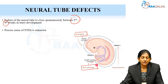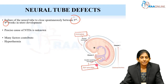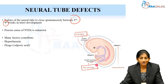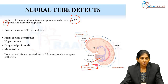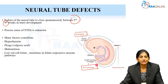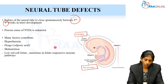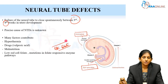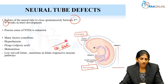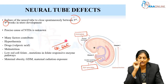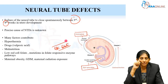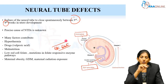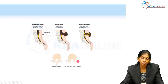The precise cause is unknown, but we have certain risk factors attributed to neural tube defects: any maternal hyperthermia or infections, maternal intake of some drugs like valproate, and maternal malnourishment especially when there is folate deficiency. Low RBC folate levels are a strong risk factor. Apart from that, maternal GDM, any radiation exposure during pregnancy, and maternal obesity are also risk factors.